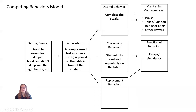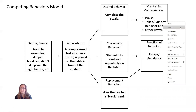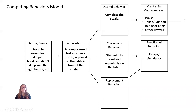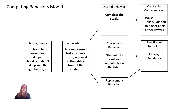We have maintaining consequences for the desired behavior. These are the reward systems we might typically have set up in a classroom — we might be using praise: 'Great job doing your puzzle, that's awesome!' We might be giving them tokens or points on their behavior chart or some other reward. So this is our ideal model: we give the student a task, they complete it, and they get a reward. That's what we would like to be happening, and it's good to know it's our overall goal.